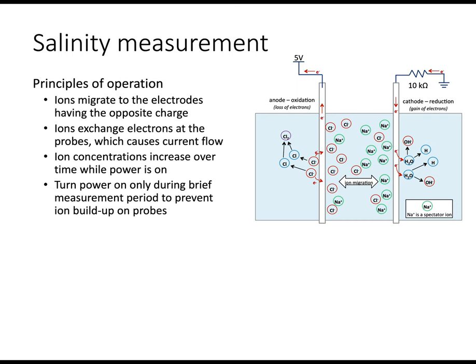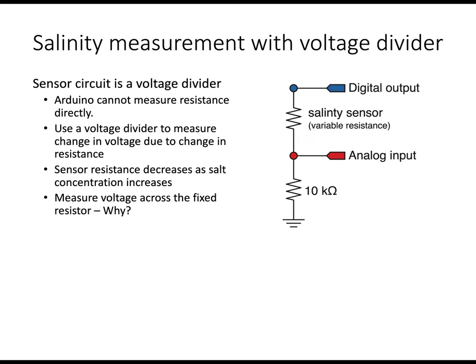The salinity measurement involves taking the salinity sensor, which are those two probes, connecting it to a 10k resistor in series and providing power via a digital output. The digital output allows us to turn the power on and off. The analog input is where the reading is made as a voltage. The sensor resistance increases when the salinity decreases. In other words, less salty water is more resistive electrically. So why are we measuring the voltage across the fixed resistor?